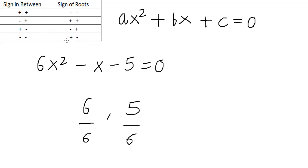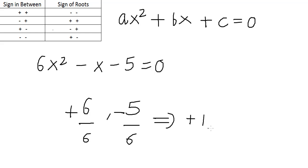As I said, in the minus-minus case, the negative sign will come with the root which has a lesser modulus value. The lesser value is 5 by 6, because 6 by 6 is 1 and 5 by 6 is less than 1. So the negative sign will come here and the other will be positive. Our two roots are plus 1 and minus 5 by 6.